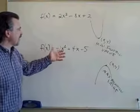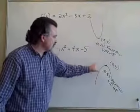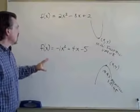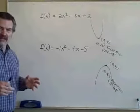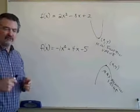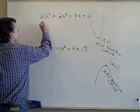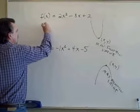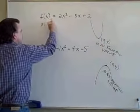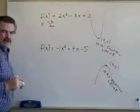If we want to find that minimum or maximum function value, we can apply the same technique we used before to find the vertex. Remember, the x value of the vertex is found by taking negative b over 2a.